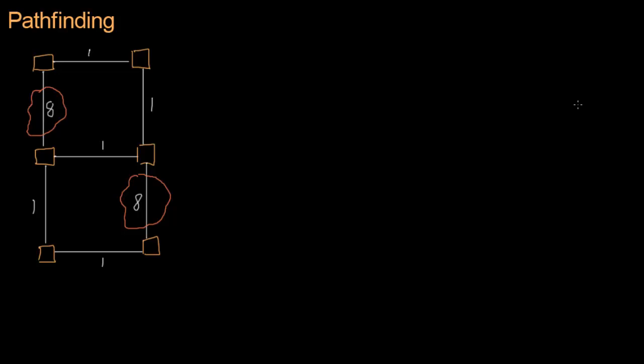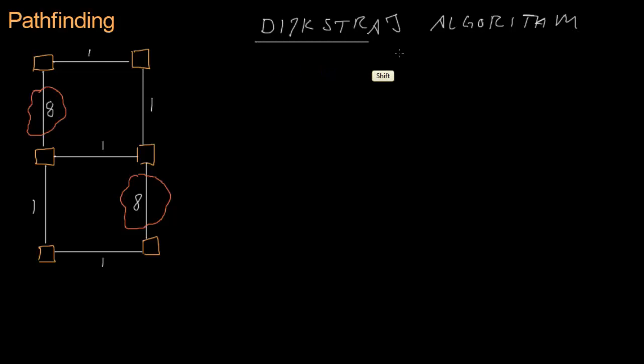We're going to devise an algorithm that takes these edge weights into account as we walk through the graph. That algorithm is called Dijkstra's algorithm. It was first made by a mathematician named Dijkstra in the 50s, and it's actually really simple. It has two steps: step 1 is to calculate the costs of each path, and step 2 is to choose the lowest cost.